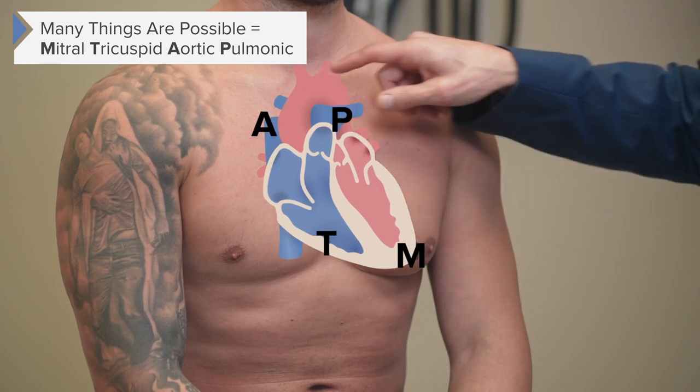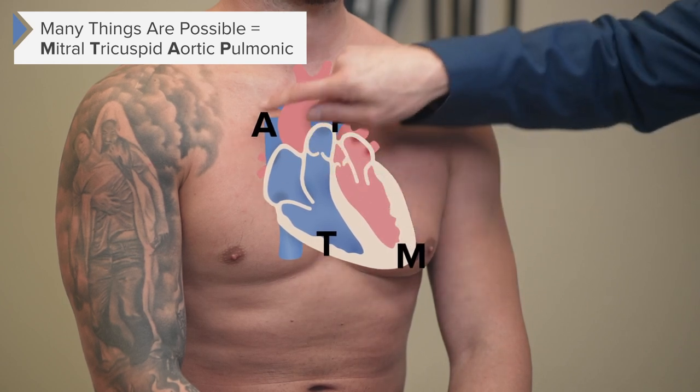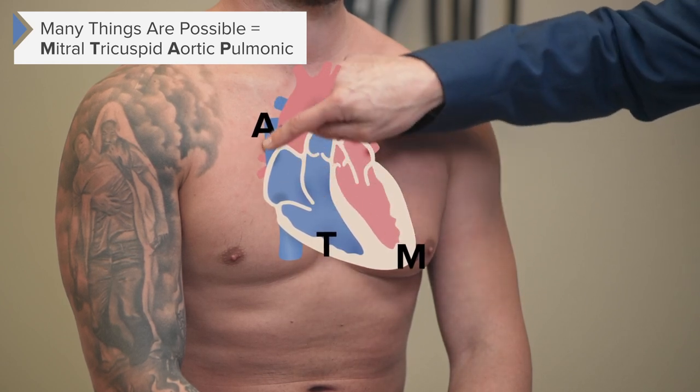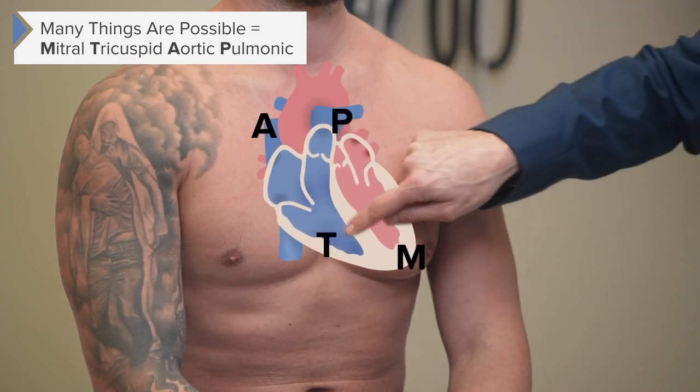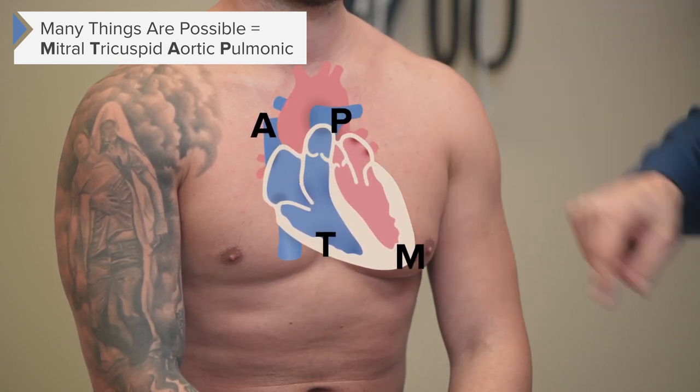You'll also remember where they're located. M-T-A-P arranged in a circle helps us keep track of where we are when listening for particular murmurs, and helps find the etiology of a murmur based on its location on the anterior chest wall.